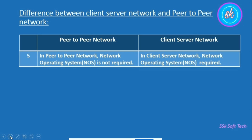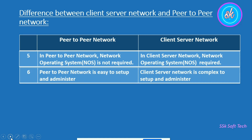The sixth point is that peer-to-peer network is easy to set up and easy to administer. The installation and setup of a peer-to-peer network is very easy, as well as the administration. On the other side, client-server network is suitable for a large network, so the setup is complex and it requires professional administration to handle such a network.